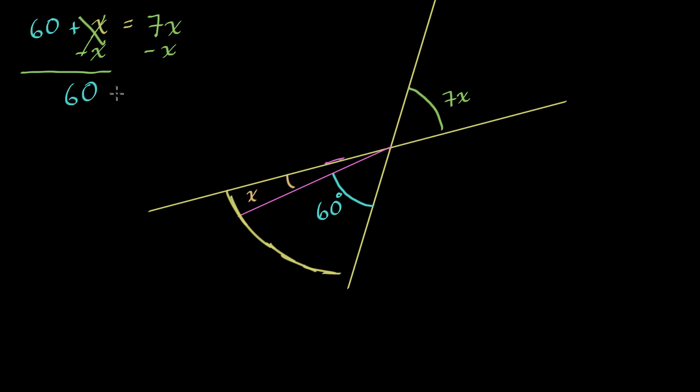And then that is going to be equal to 7x minus x. If I have 7 of something, and I get rid of one of them, I'm going to have 6 of that something left. So that's going to be equal to 6x.